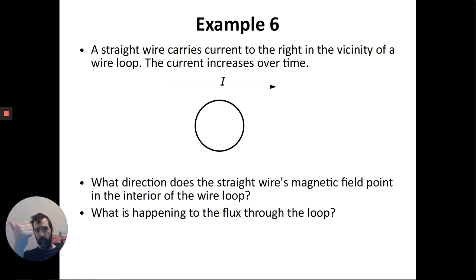And that current needs to go to the right. And if that current is going to the right, my fingers circulate around the current this way. So above the wire, the magnetic field is coming out of the screen. So you would represent that with a bunch of dots. Below the wire, the magnetic field is going into the screen. It would represent that with some x's.